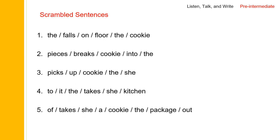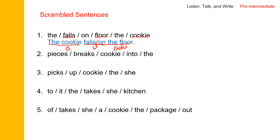Now let us do scrambled sentences. We have floor and cookie — they can be subjects because they are nouns. But falls is the verb, so floor doesn't fall, but cookie does. The cookie falls on the floor. Cookie is the subject, falls is the verb, and on the floor is an adverbial phrase.